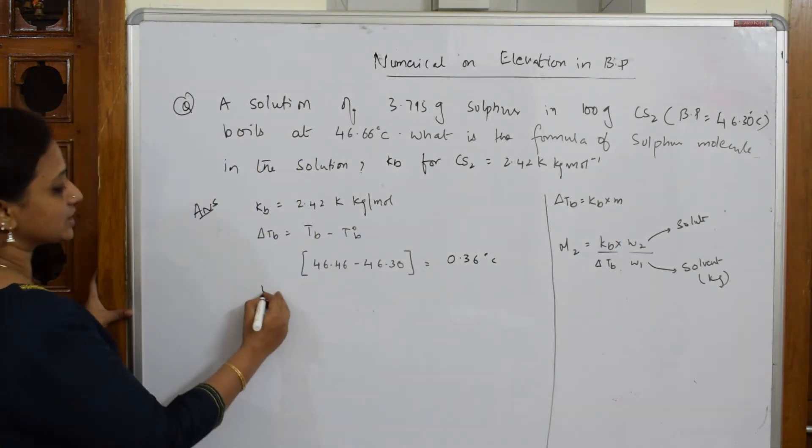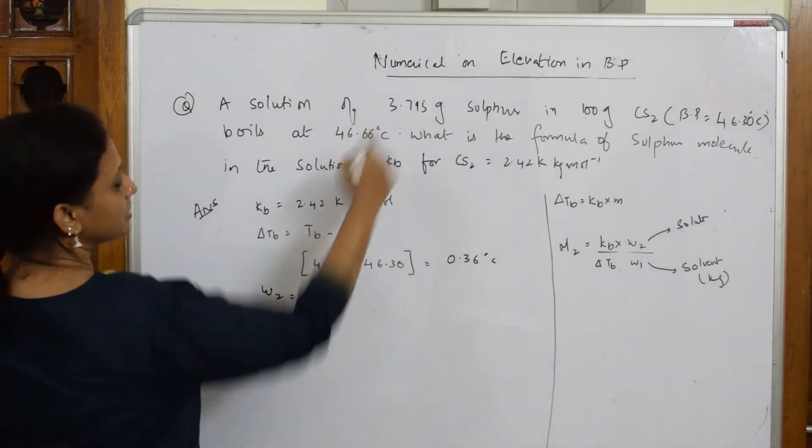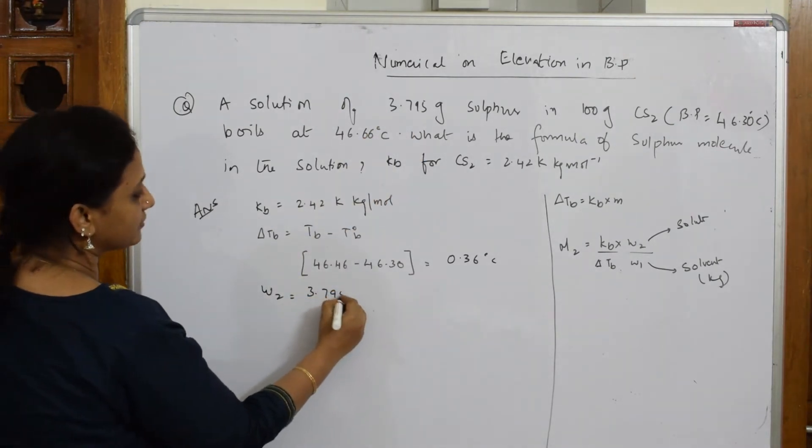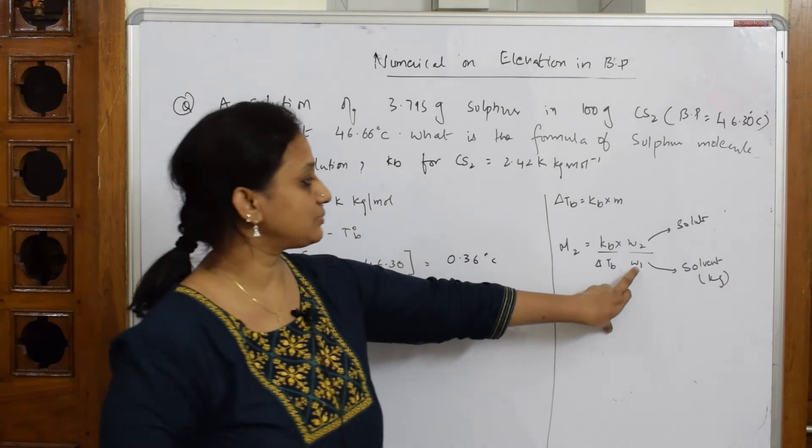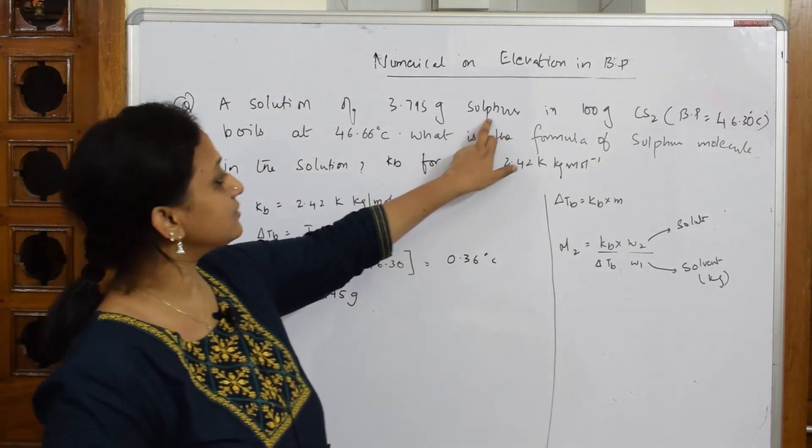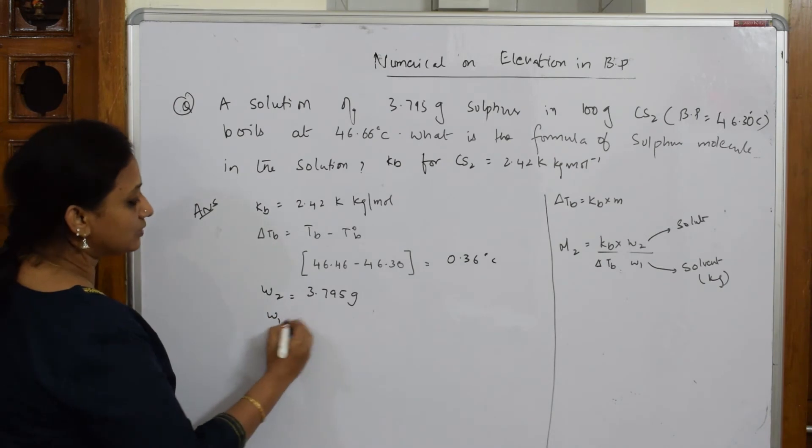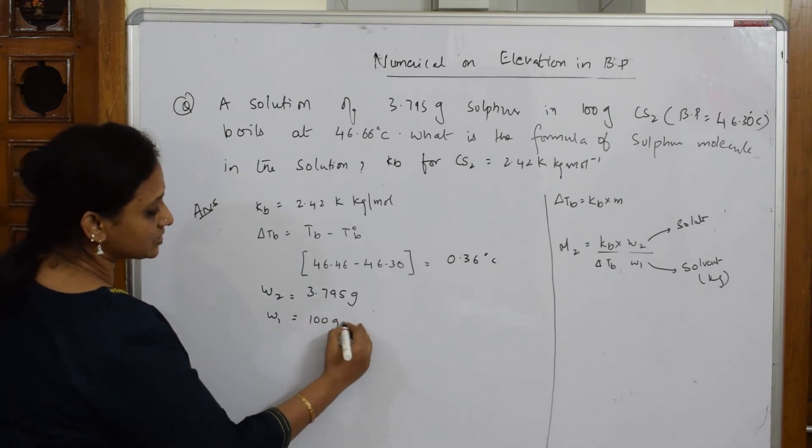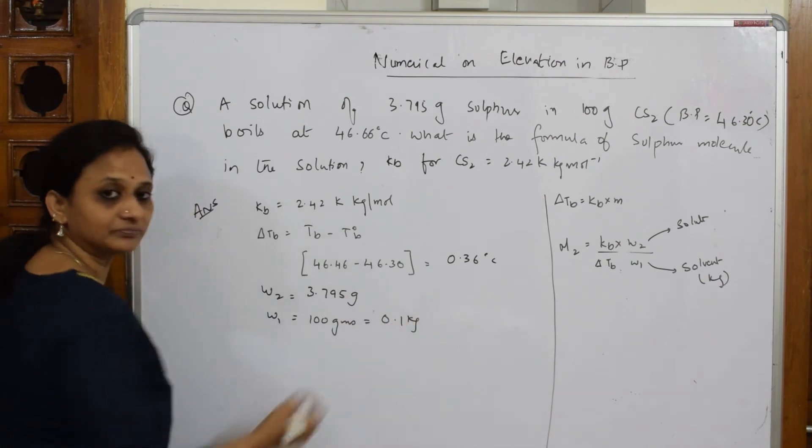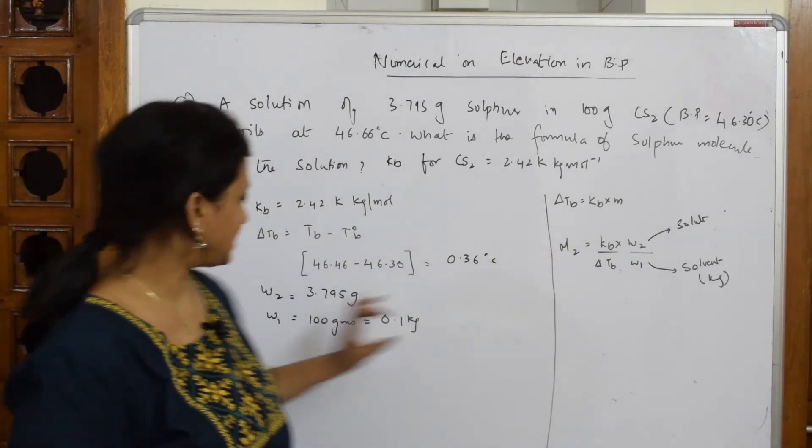Now w2 I need to write. So what is given to us? w2 given to us is 3.795 grams. Let's see what is w1 given to us. They said sulfur in 100 grams of carbon disulfide, that is your solvent. So w1 is given to us 100 grams, which is equal to 0.1 kg. Done. Yes, so all the data is available.